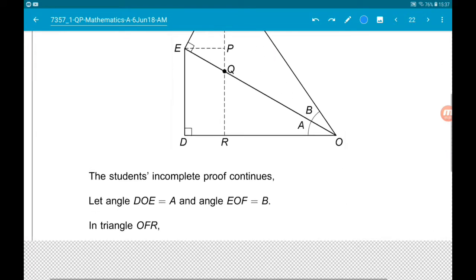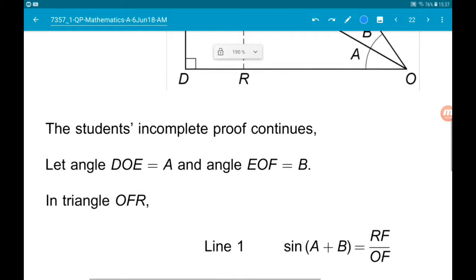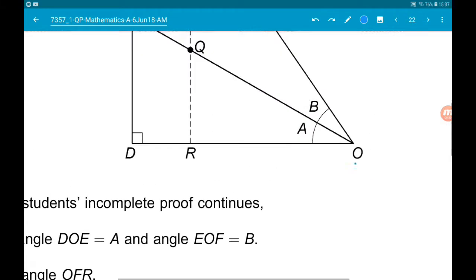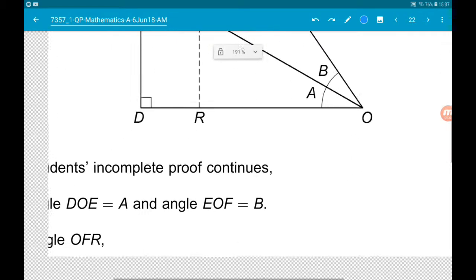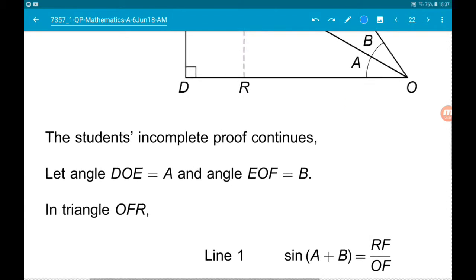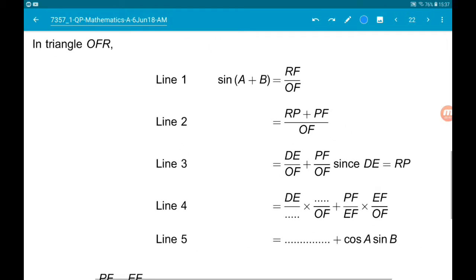Good times. The student's incomplete proof continues. So they're going to let angle D O E equal A. So that's this angle here. And angle E O F is equal to B. So we then have that proof here.